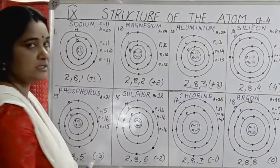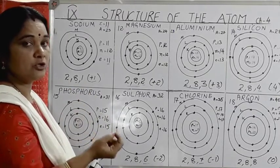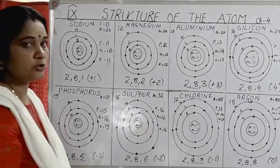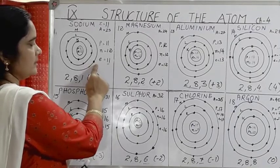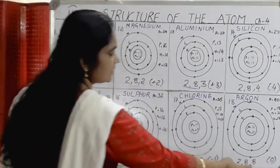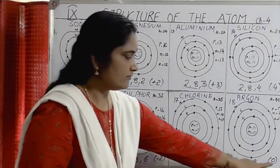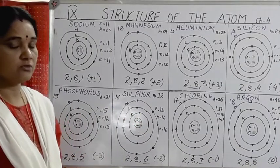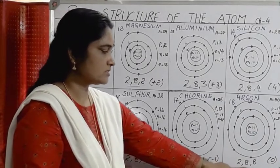From sodium to argon, all elements have 3 shells: K, L, M. For elements from hydrogen to helium, there is only K shell. Lithium to neon have K and L shells, with neon having L shell completely filled (period 2). In period 3, the number of electrons in M shell increases from 1 (sodium) to 8 (argon). Argon's valency is 0 because its outermost shell is completely filled — it will not form any compound.